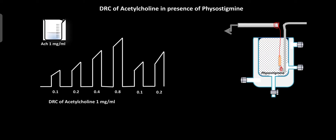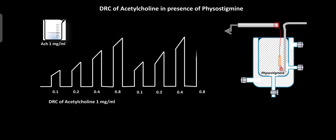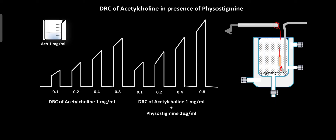After 90 seconds, stop the drum, wash the tissues two to three times, then after three minutes, record the baseline again and add 0.4 ml acetylcholine solution and record responses for 90 seconds. After 90 seconds, stop the drum and change the Ringer's solution to remove the drug. Once again record the baseline, then add 0.8 ml acetylcholine solution and record the responses for 90 seconds. Stop the drum and change the Ringer's solution. Then record the baseline response — this is the DRC of acetylcholine in the presence of physostigmine.